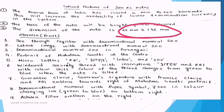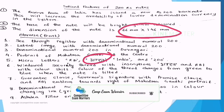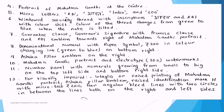On the front side, there is a see-through register with denomination numeral 200, latent image with denomination numeral 200, denomination numeral 200 in Devanagari, and portrait of Mahatma Gandhi at the center. Micro letters RBI, 'Bharat' in Hindi, 'India,' and '200' are also present. The denomination numeral with rupee symbol increases from left to right, and the color-changing ink on the 200 shifts from green to blue, visible in proper lighting on the bottom right. The Ashoka Pillar emblem is on the right.